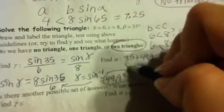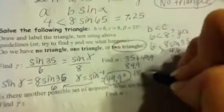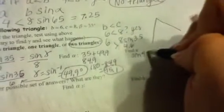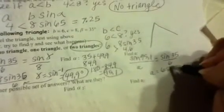Then once we have gamma, we can find alpha, because we can just take beta and gamma, add them together, and that gives us 84.9, and then we take 180 and subtract 84.9, and we get 95.1. So there's alpha, and then once we have alpha, we can find A by going sine of 95.1 over A equals sine of 35 over 6. We cross-multiply, so A is 6 sine of 95.1 divided by sine of 35, which gives us 10.4.